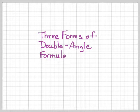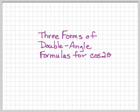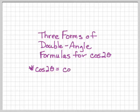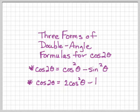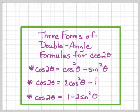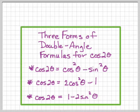We actually have three forms of the double angle formula for cosine of 2θ — more to memorize, but useful. Cosine 2θ can be: cosine²θ − sine²θ; it can also be 2 cosine²θ − 1; and it can also be 1 minus 2 sine²θ. Those are not terribly hard to prove.